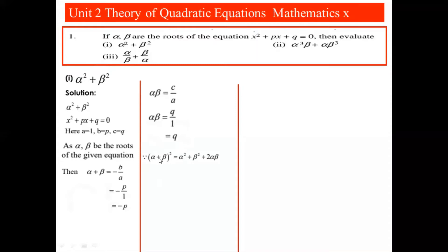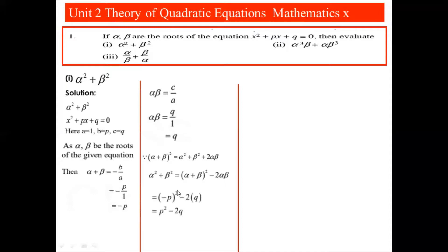We need to find α² + β². We know that (α + β)² = α² + β² + 2αβ, so α² + β² = (α + β)² - 2αβ. Replacing the values, α + β = -p and αβ = q, we get α² + β² = (-p)² - 2q = p² - 2q.